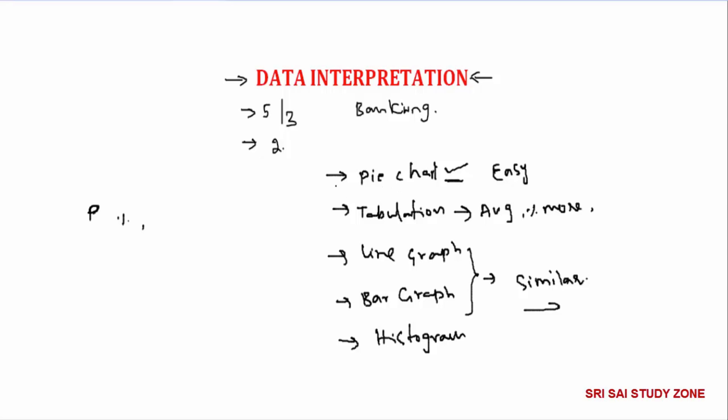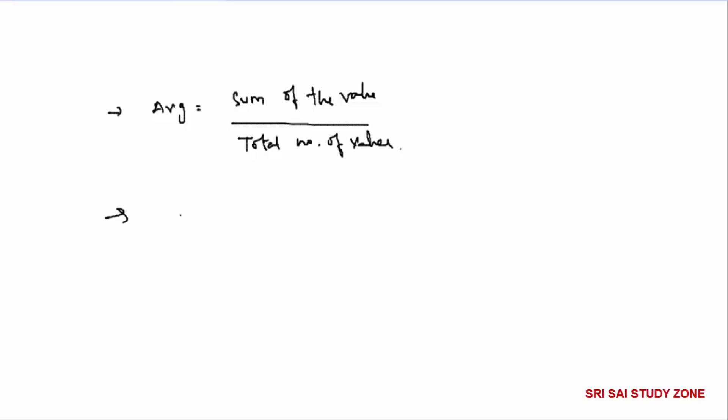Today we will learn how to use a pie chart and solve data interpretation problems. We will understand how to use tabulations and table values. We will also consider percentage, total value, and percentage increase — comparing between the two.